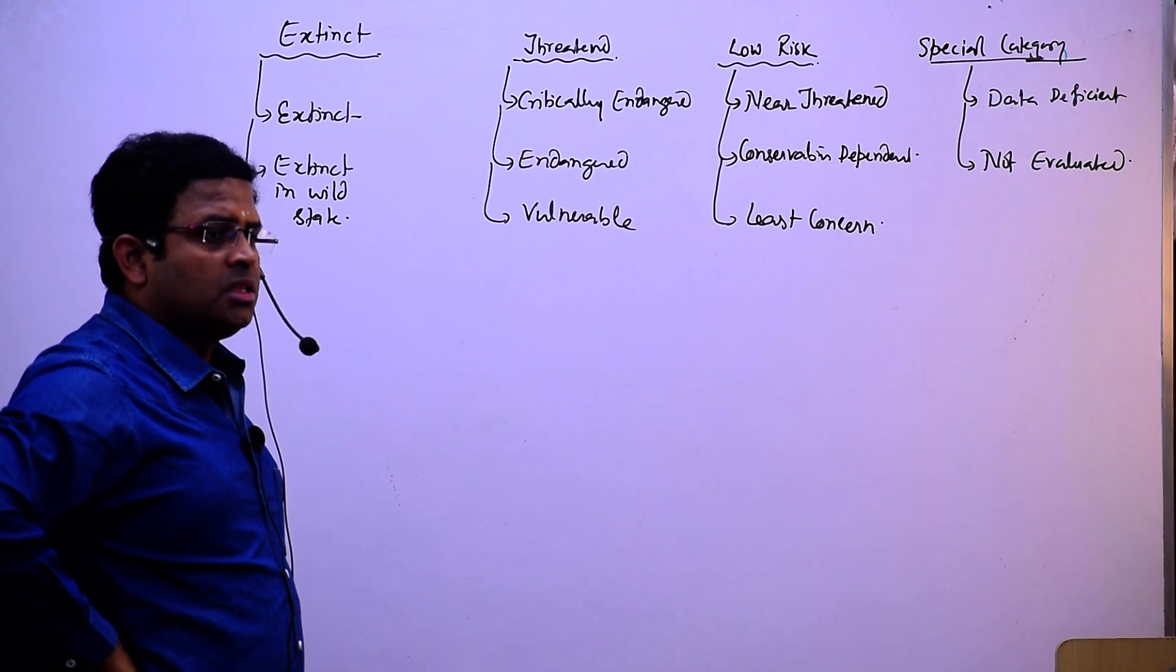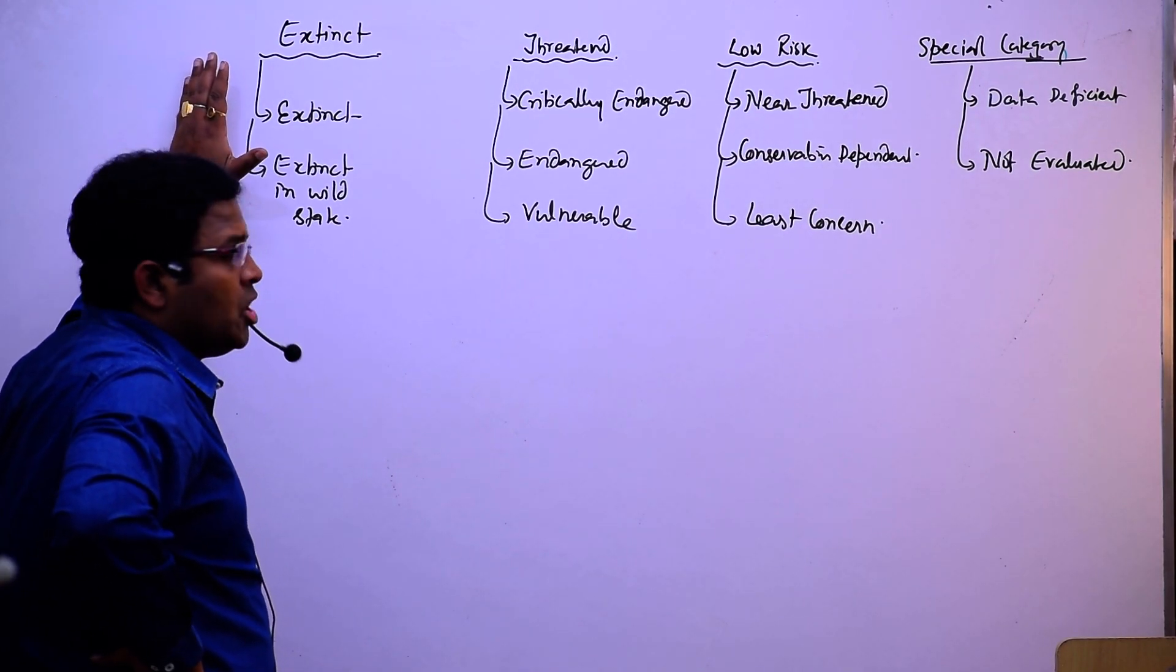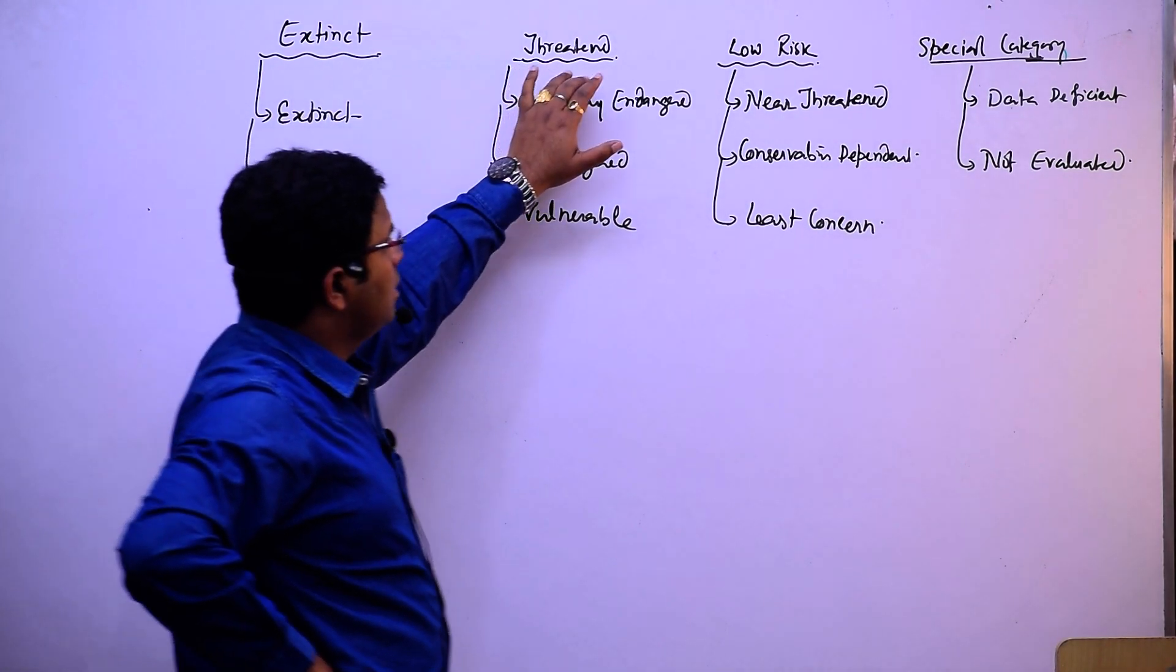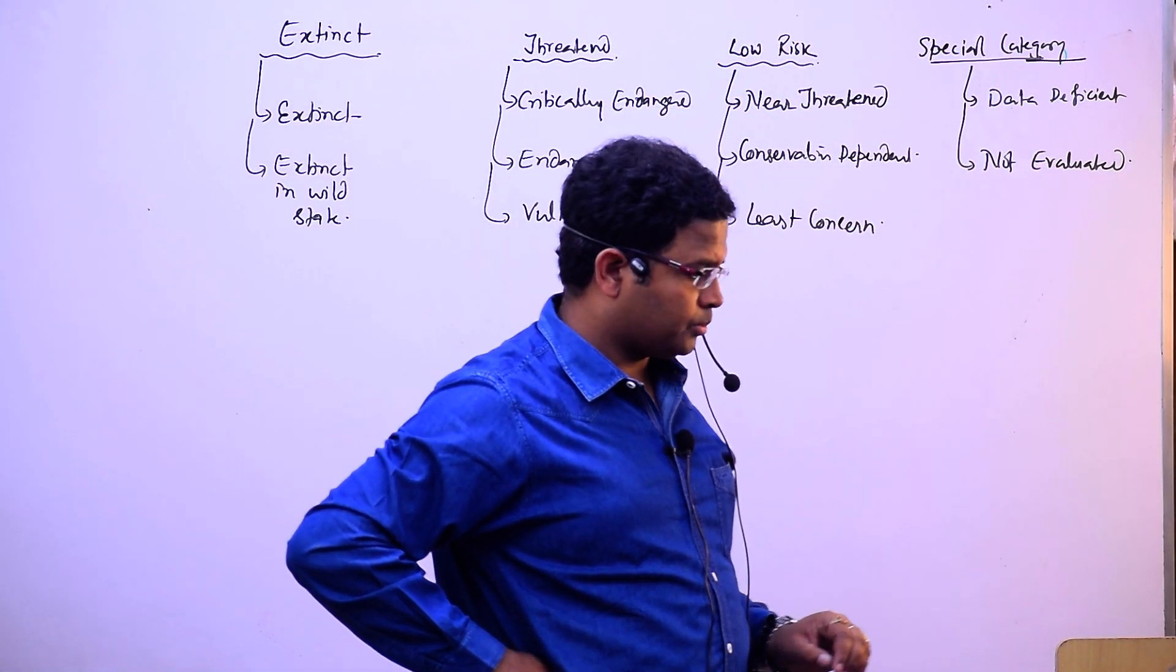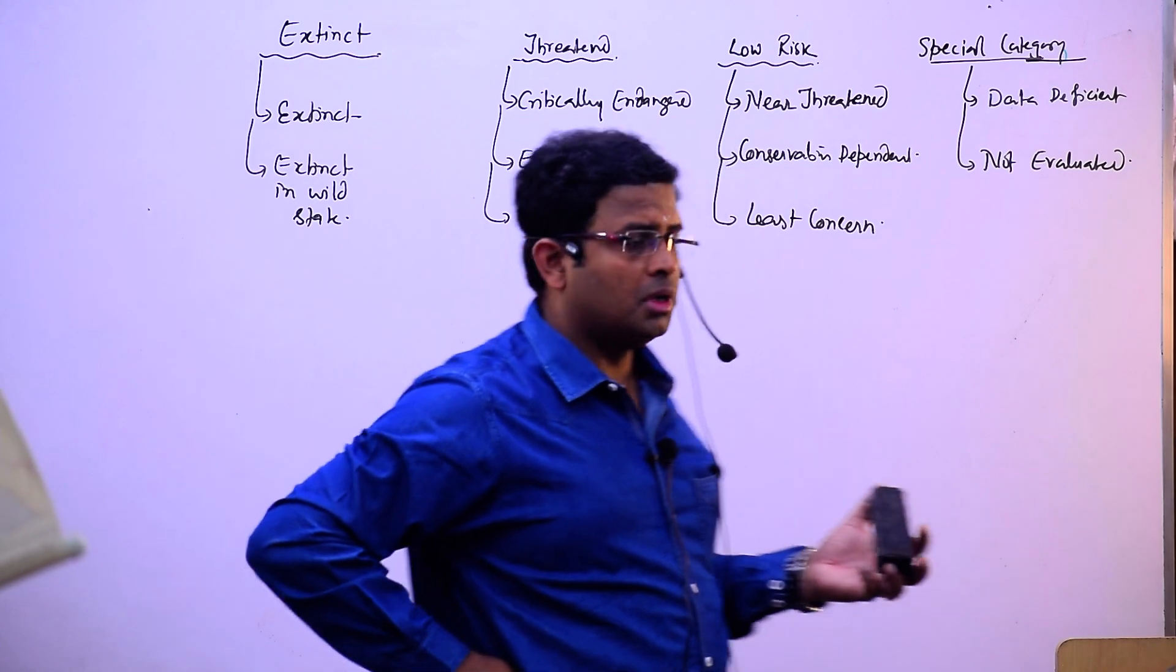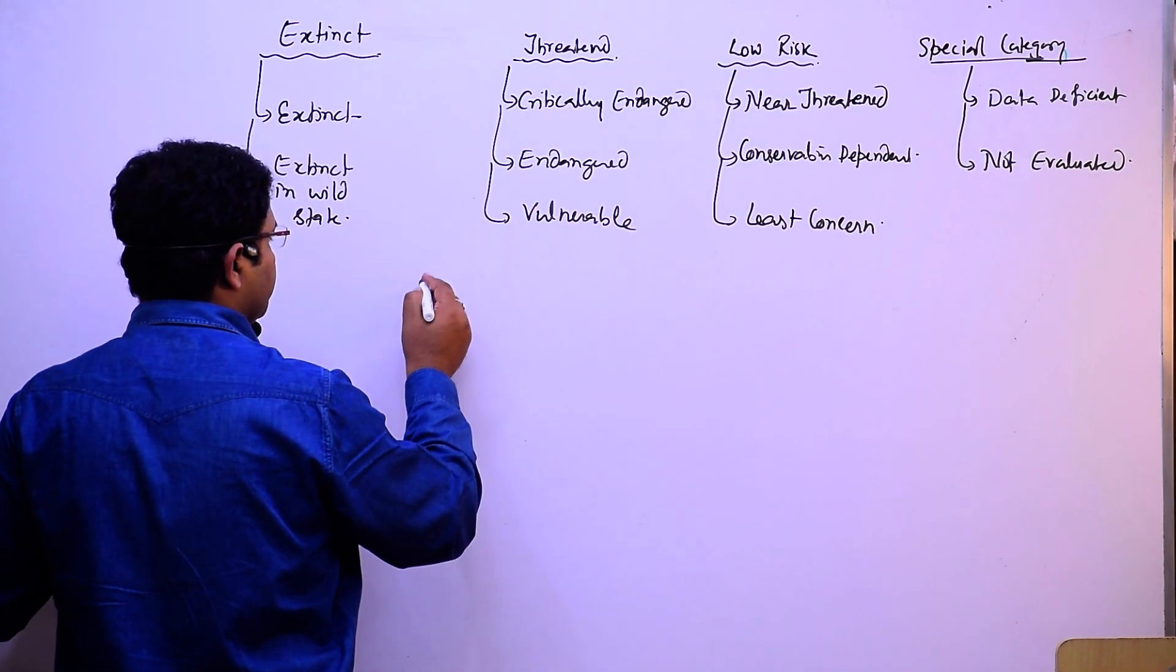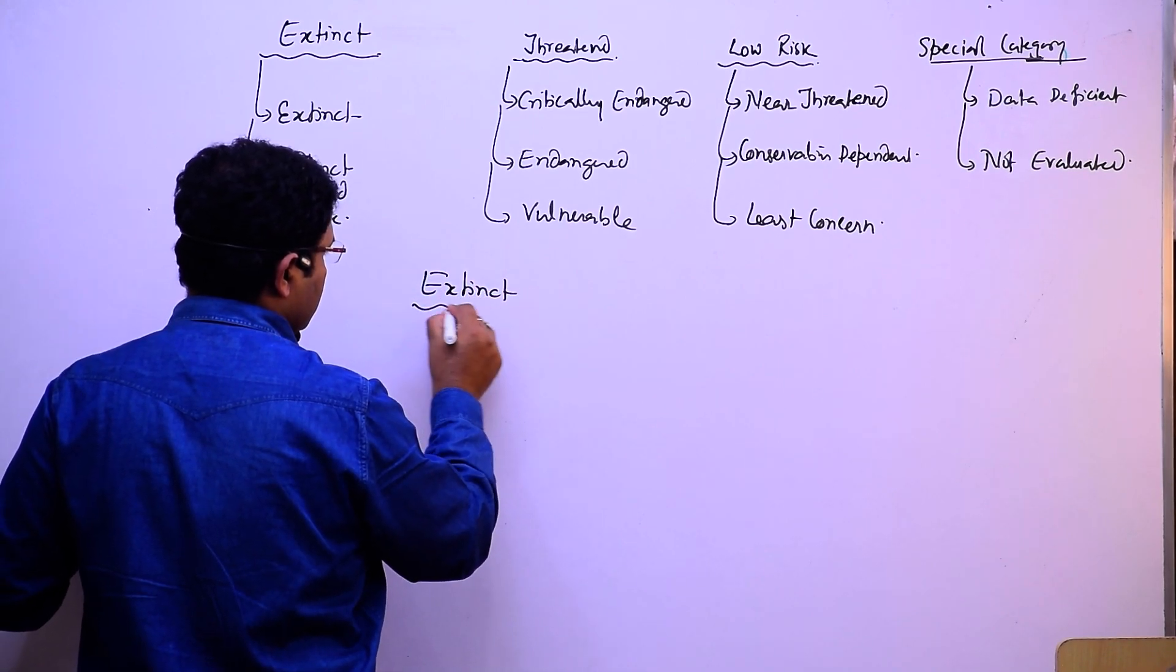These are the things coming under IUCN Red List. They are: extinct, threatened, low risk, and special category. We are going to see extinct first.